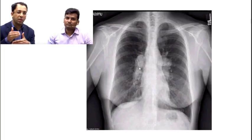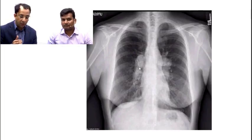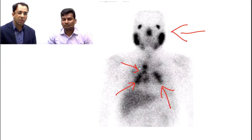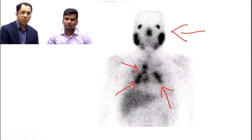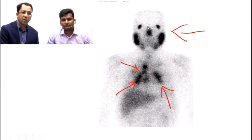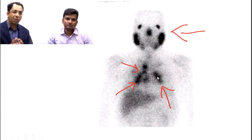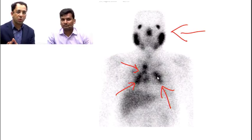Putting things together, this X-ray pattern probably points to sarcoidosis. A Gallium-67 radioisotope scan was done — sarcoid tissue is known to take up Gallium-67. The scan showed high uptake in the lacrimal and parotid glands with physiological uptake in the nasopharynx, giving the 'panda sign,' and high uptake in mediastinal lymph nodes, giving the 'lambda sign.' This corroborates the diagnosis of sarcoidosis.